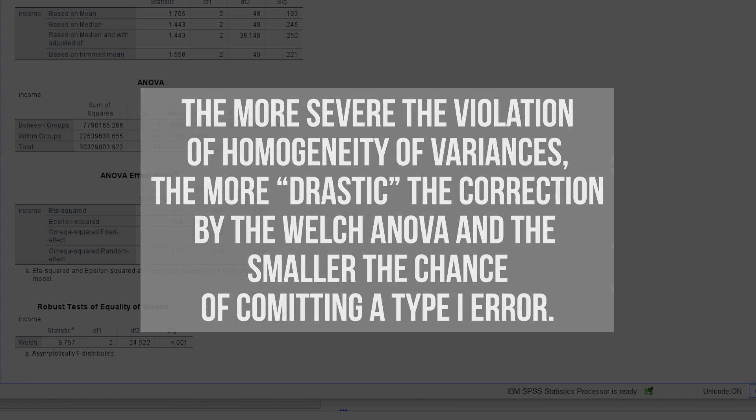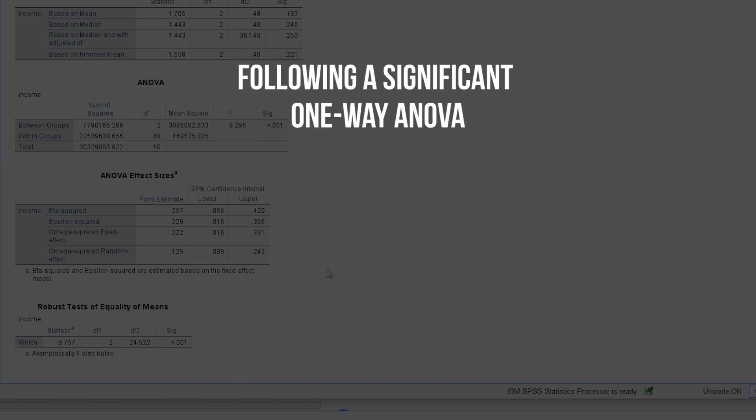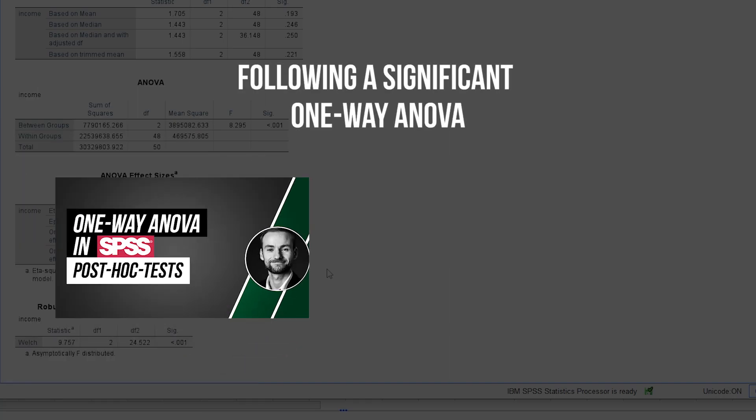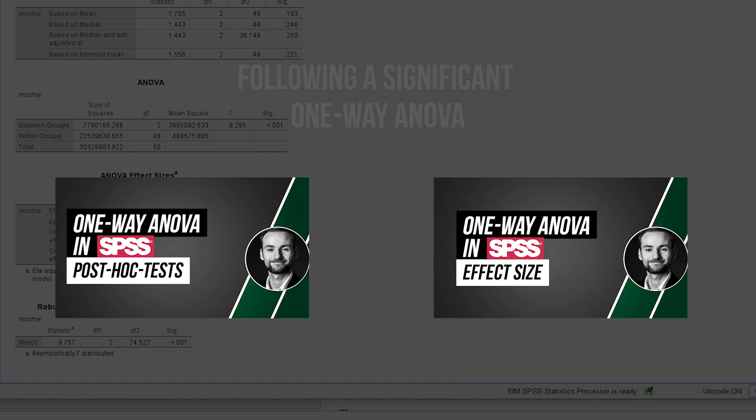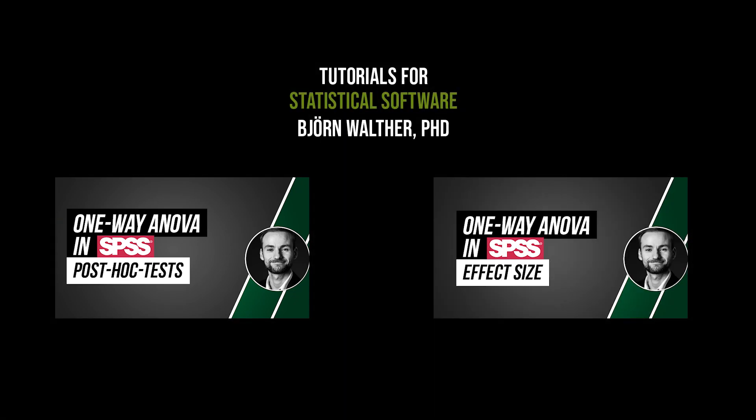After a one-way ANOVA with a low p-value, post hoc tests should be calculated to see between which groups differences exist. An effect size for the one-way ANOVA itself is optional. The two videos on the screen will show you how to do each.